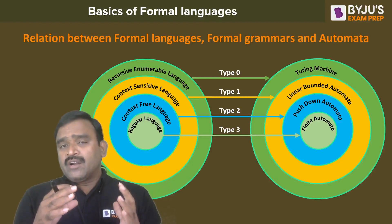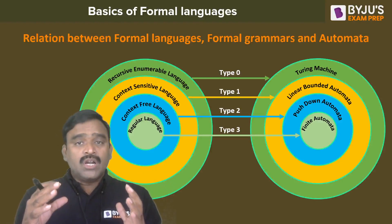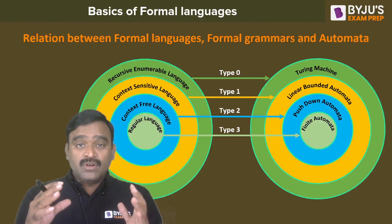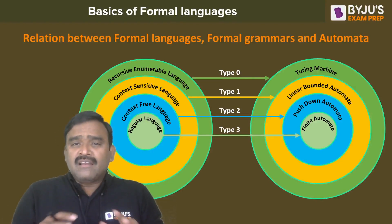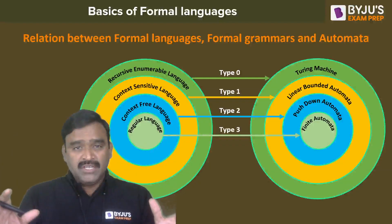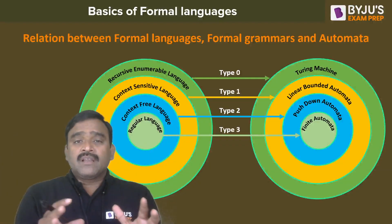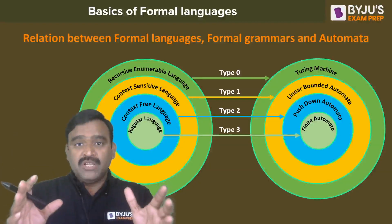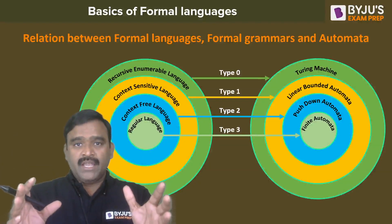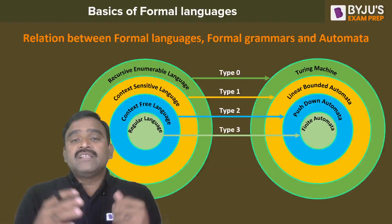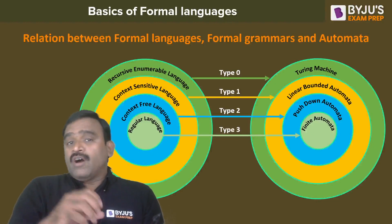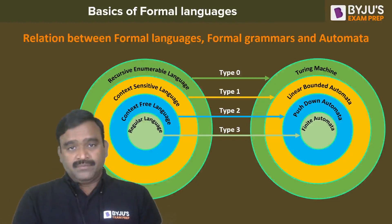Finite automata, pushdown automata, linear bounded automata, and Turing machine — these are not physical machines; these are abstract machines for recognizing formal languages, representing what can be done and what cannot be done.